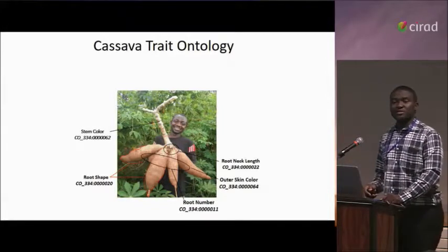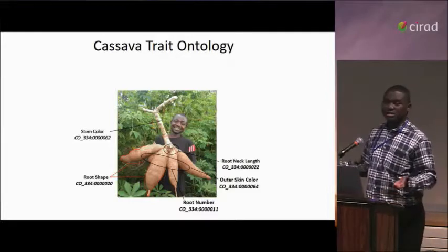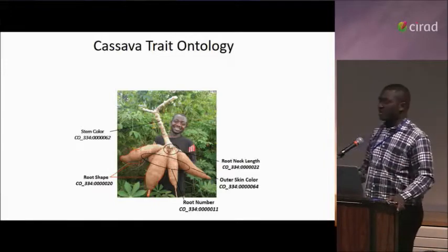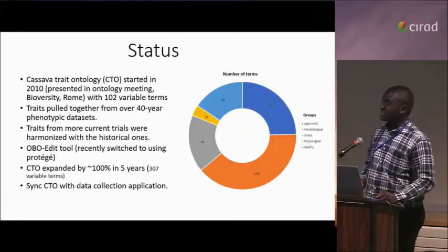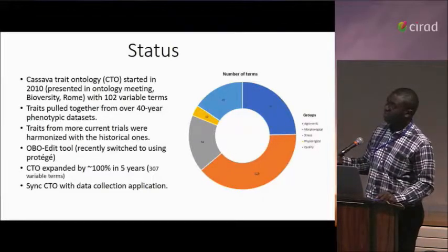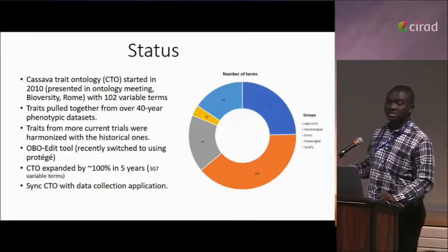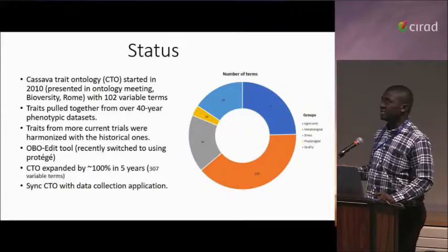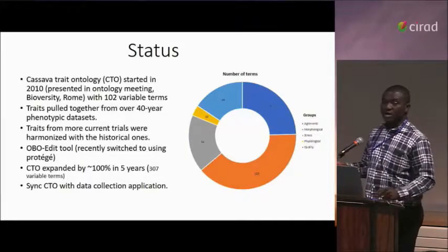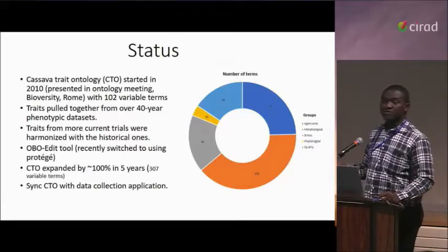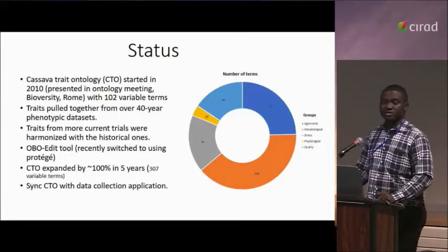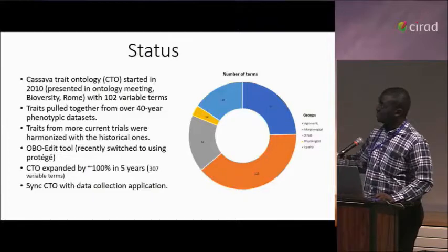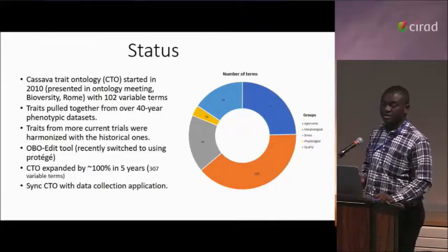This diagram shows the cassava trait ontology — an image description of what cassava is, showing the stem color, root shape, and neck length, to give an overview of what cassava trait ontology is. We started the ontology in 2012 with 102 variable terms, pulled together from a 40-year dataset from IITA. We harmonized the historical data with current trials. OBO Edit was used initially, and more recently we tried to switch to Protégé. We have expanded the ontology and currently have 307 variable terms.